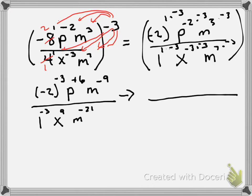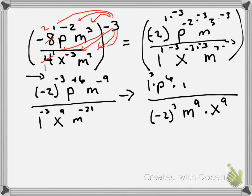I'm going to move everything where they go: if they have a negative exponent they're going to the bottom, if they have a positive exponent they stay where they are. The negative 3 on the negative 2 moves to the bottom and becomes positive 3. P to the 6th is happy where it is. M to the negative 9 goes to the bottom as M to the 9th. The 1 with the negative 3 goes to the top as positive 3. X stays at the bottom as X to the 9th. M to the negative 21 becomes positive 21 on top.